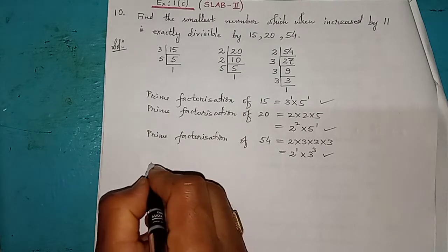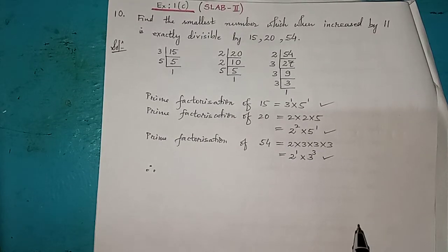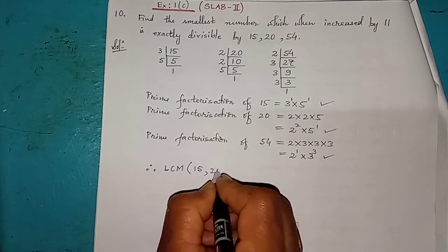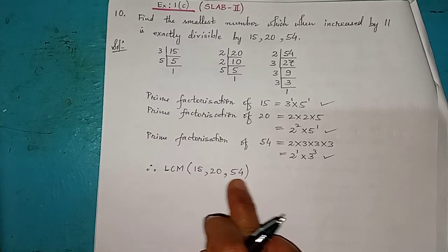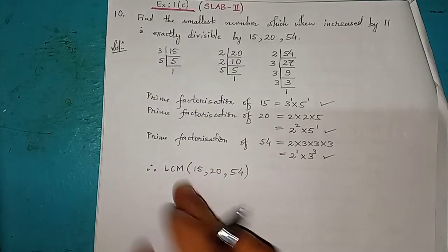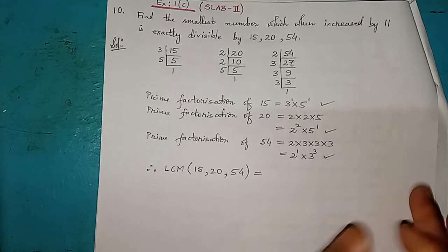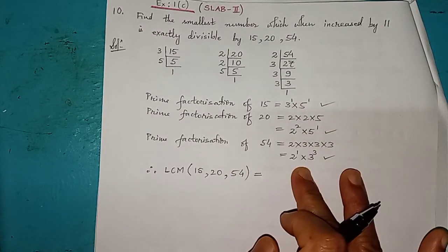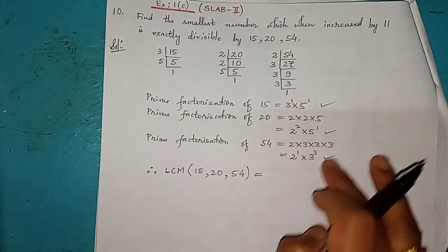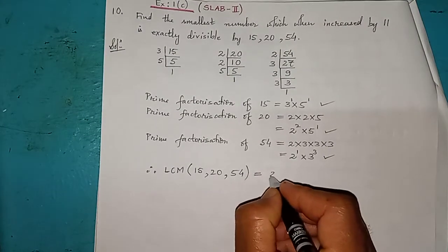So these prime factorizations will help us find the LCM. In this question number 10, just like question 9, there is no need to find HCF — the question involves LCM. The LCM, or lowest common multiple, is the smallest number that is completely divisible by all three given numbers. The prime factors appearing across all three numbers are 2, 3, and 5 — no other prime factors.